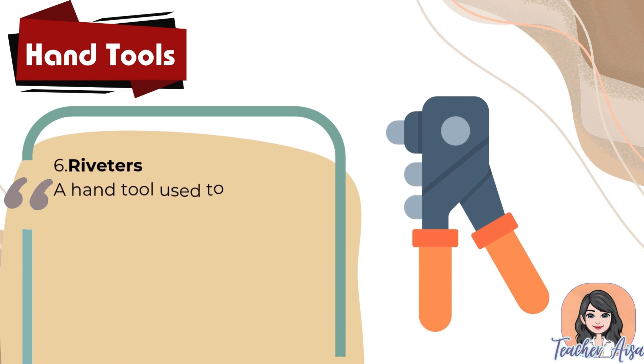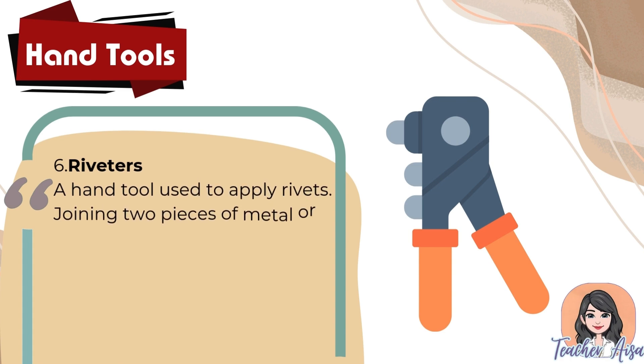Six: riveters. A hand tool used to apply rivets, joining two pieces of metal or other materials.